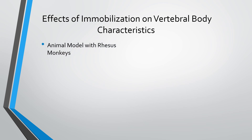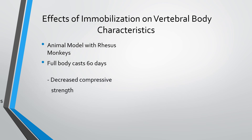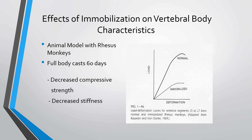In a study with rhesus monkeys, subjects were placed in body casts and immobilized for two months, then their vertebral bodies were removed and subjected to compressive loading to failure. The results showed that both the strength to failure and the strength against deformation had diminished to about 31% of that expected for normal bone — less than half of normal.